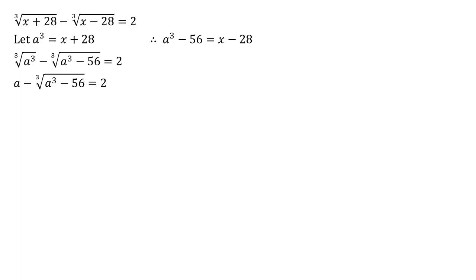So rearranging this equation to get the cube root by itself, we know that a minus two is equal to the cube root of a cubed minus 56. And we can now cube both sides to get rid of that. So we have a minus two cubed is equal to a cubed minus 56.